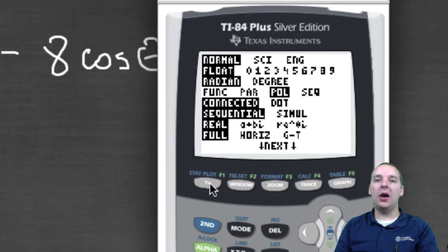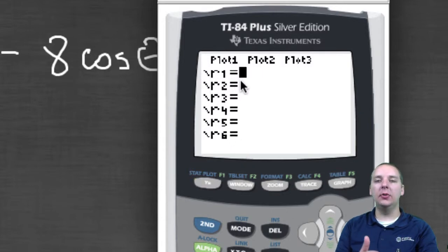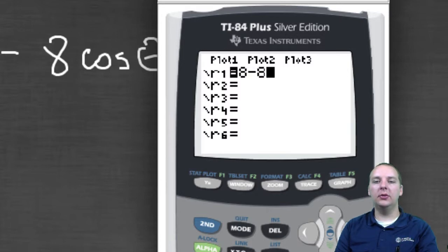And what you'll find is now when you go to y equals it's going to look different than what it used to. It used to have y equals a function of x. You'd have like y equals x squared. But now it's got an R and it'll be a function of theta. And so we'll take 8 minus 8 cosine theta.